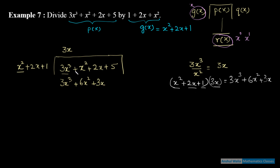यही नीचे लिखना है: 3x³ + 6x² + 3x। खास ख्याल: same degree वाले terms को ऊपर-नीचे align करना है। अगर कोई term miss हो तो वो अपनी degree के column में जाएगा। Degrees हमेशा common रखनी हैं। अब ऊपर से नीचे subtract करेंगे — subtraction में signs change हो जाते हैं।